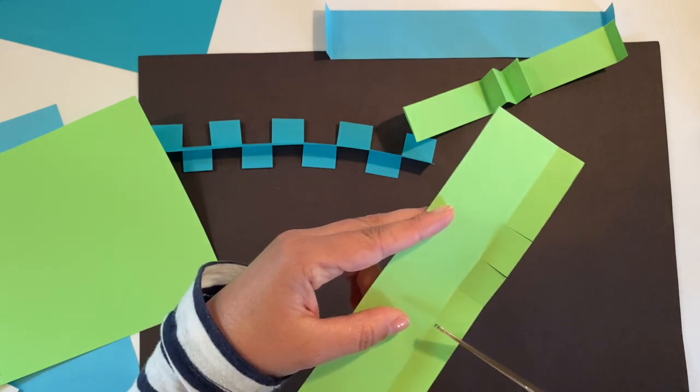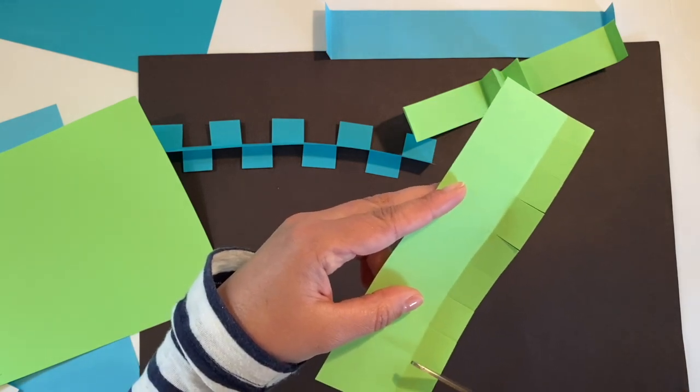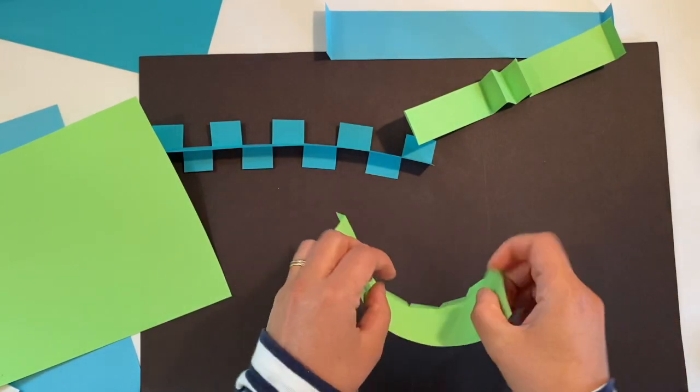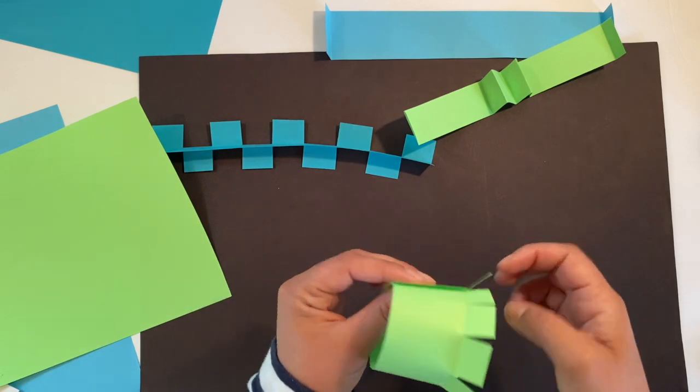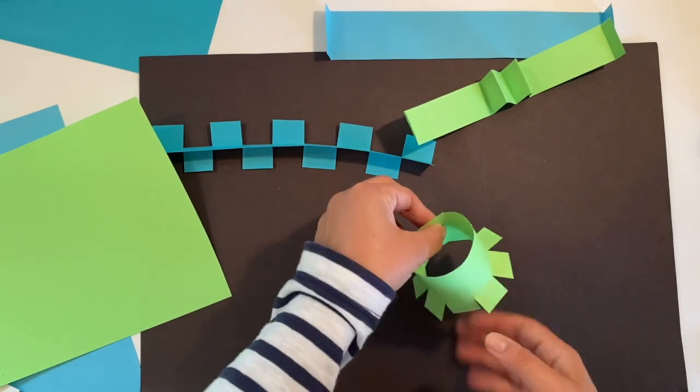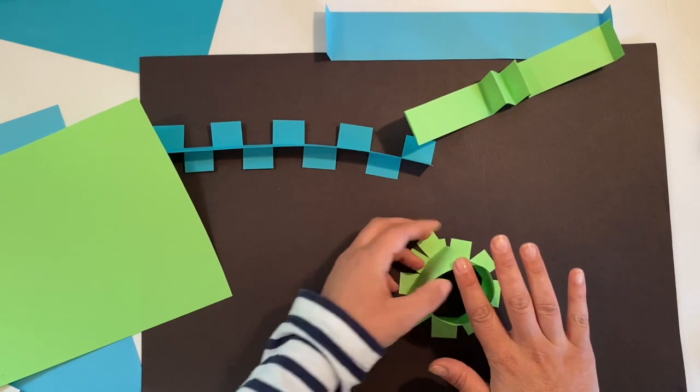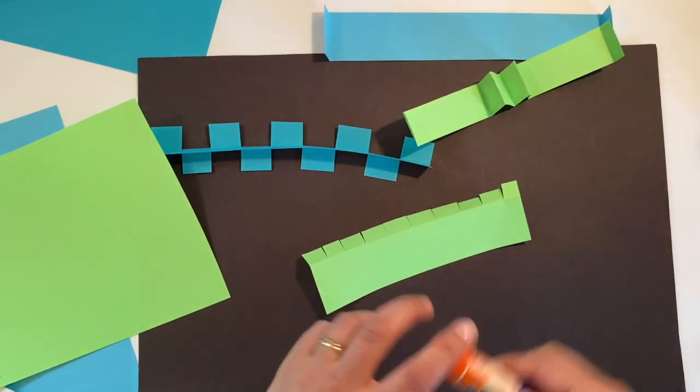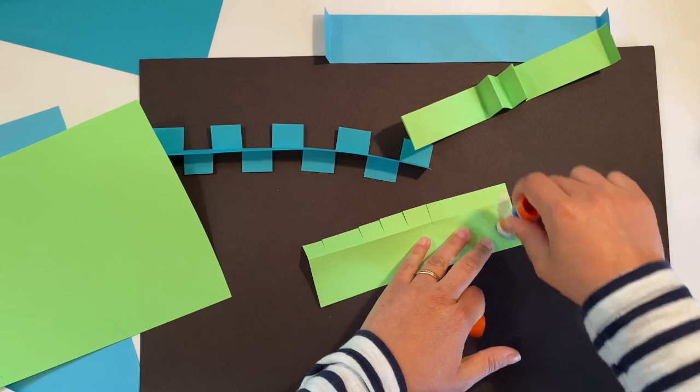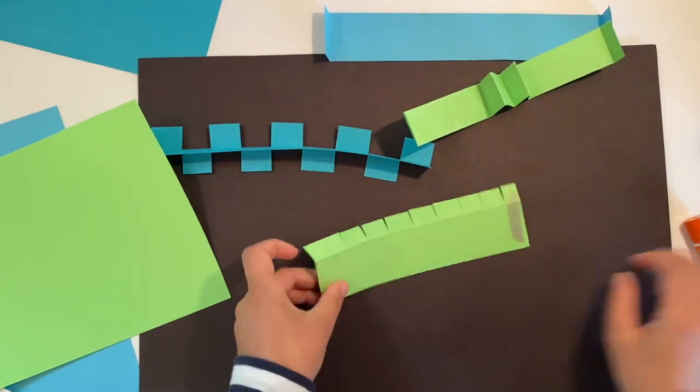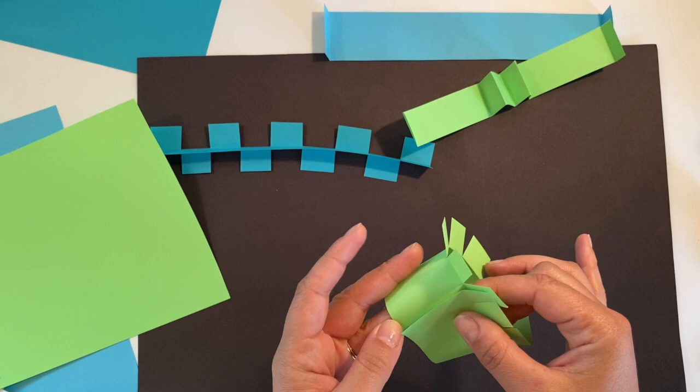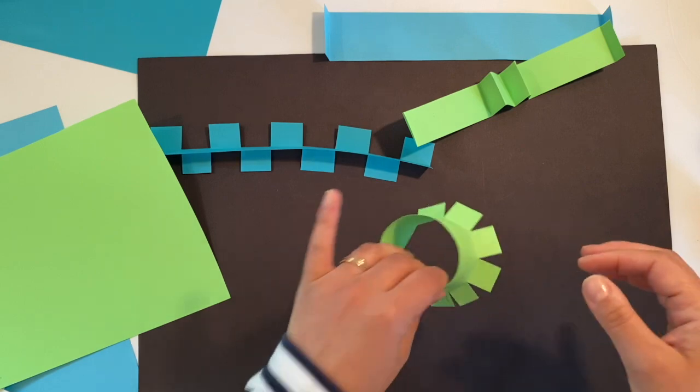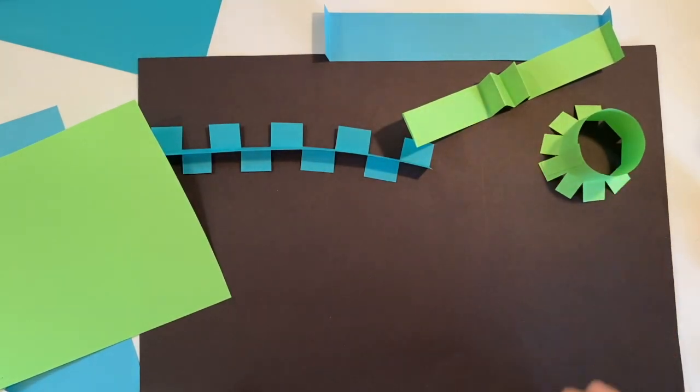I cut the tabs and then I'm going to glue it together and shape it as a cylinder. Just apply glue on one of the edges of your cylinder, secure it, and there you go—you have a cylinder that you can glue onto your sculpture when you have all your pieces ready.